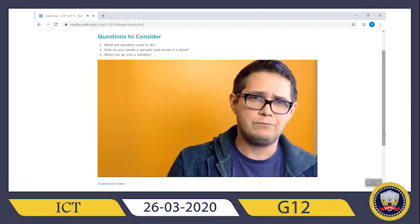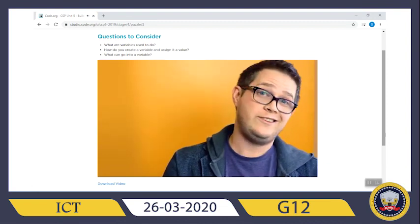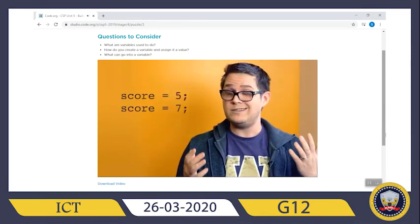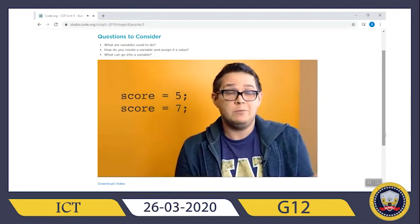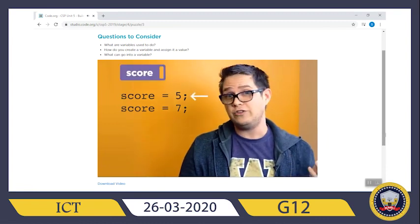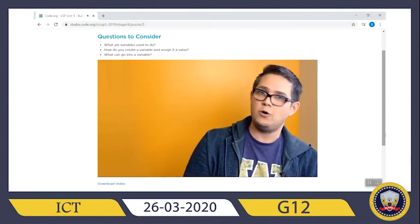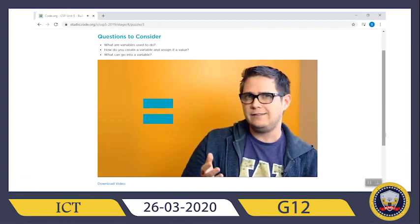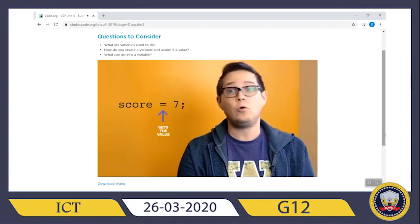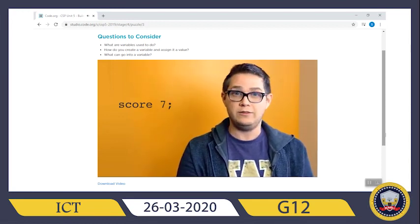In many coding languages the equal symbol is called the assignment operator because you use it to assign a value to a variable. You're probably used to seeing it in math, but in programming it's a little different. If you were in math class and saw `score = 5` and `score = 7`, something would be wrong — score can't equal both five and seven. But in code, a computer executes instructions one after the other, so this just tells the computer to set score to five and then on the next line set it to seven. Programmers often say 'gets the value' instead of 'equals' — so `score = 7` is read as 'score gets the value seven.' Some programming languages avoid the confusion entirely by representing assignment with a sideways arrow.